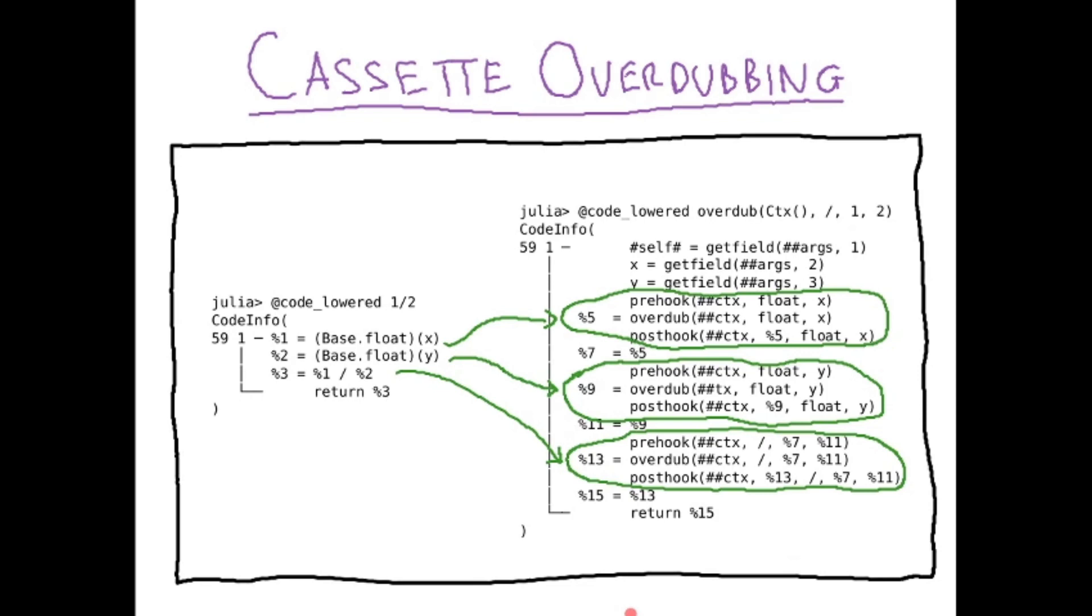And by this you can control the behavior by overloading the overdub method and the other method and dispatching on the type of f, the type of the context and the arguments. So this kind of transformation is already quite useful and sufficient in many situations, like extraction of computation graphs directly, forward mode AD can be implemented, logging, concolic execution tools exist, and so on.